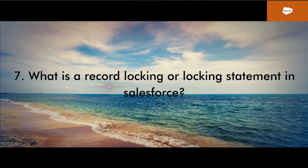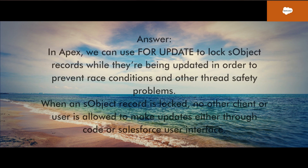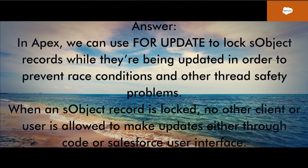Question 7: What is a record locking or locking statement in Salesforce? In Apex, we can use FOR UPDATE to lock sObject records while they're being updated in order to prevent race conditions and other thread safety problems. When an sObject record is locked, no other client or user is allowed to make updates either through code or the Salesforce user interface.